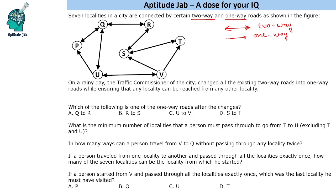On a rainy day, the traffic commissioner of the city changed all the existing 2-way roads into 1-way roads while ensuring that any locality can be reached from any other locality. So all these localities are still connected, but all the 2-way roads have been converted to 1-way roads, and based on this we have to answer these questions.